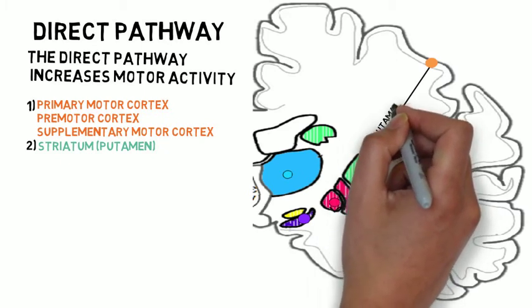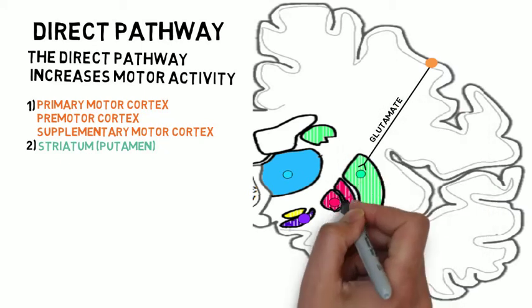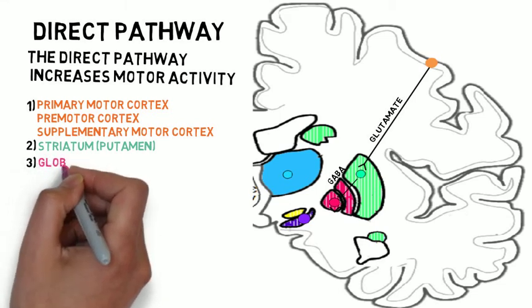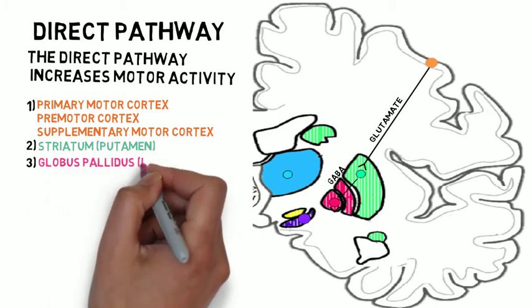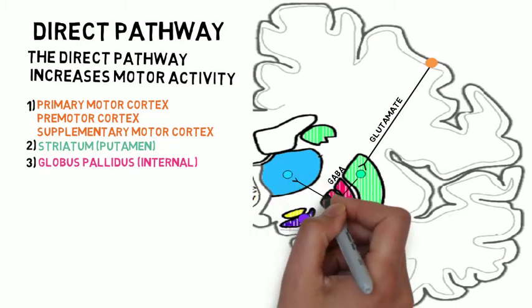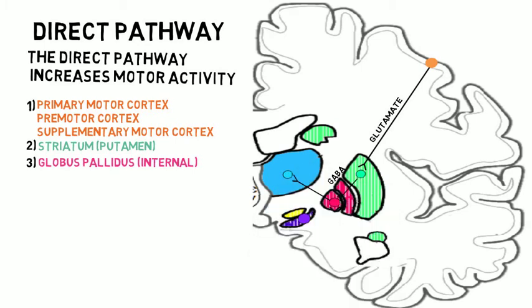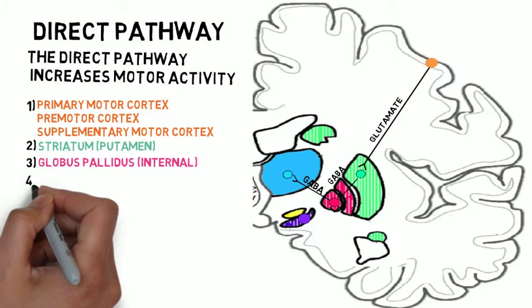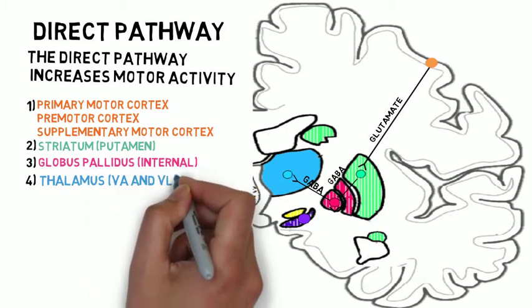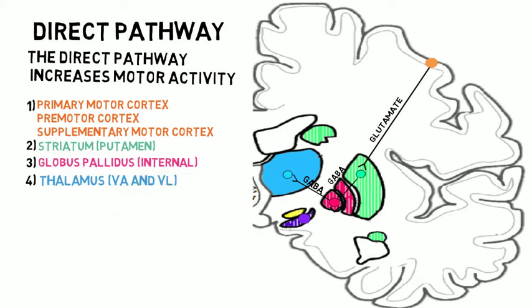The cortical projections to the striatum use the neurotransmitter glutamate, which excites the medium spiny neurons. In turn, the neurons in the striatum secrete the inhibitory neurotransmitter GABA from their axon terminals into the globus pallidus internal. Neurons in the globus pallidus internal are normally tonically active GABAergic neurons that project to the ventral anterior and ventral lateral thalamus, collectively known as the motor thalamus. More inhibition of these neurons results in less inhibition of the motor thalamus — this reduction in inhibition is referred to as disinhibition.